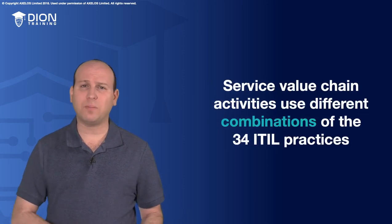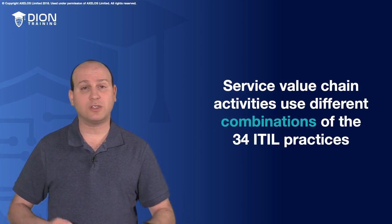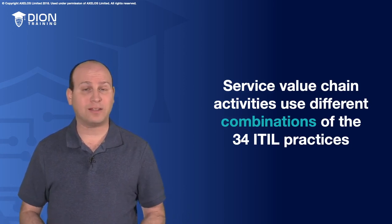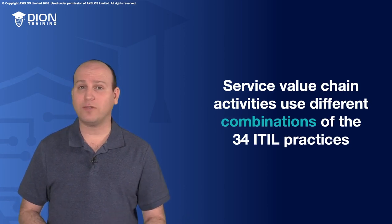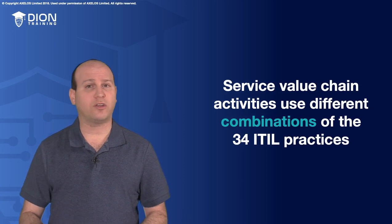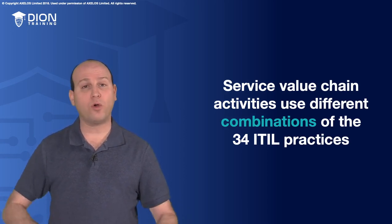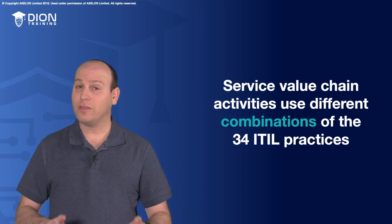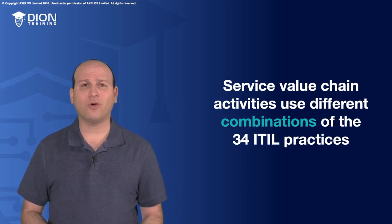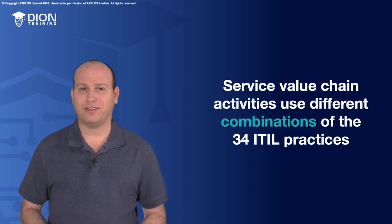To convert these inputs into outputs, value chain activities are gonna use different combinations of the 34 ITIL practices that we'll discuss throughout the remainder of this course. Each activity can draw upon internal or third party resources, and look at different processes, skills and competencies from one or more of these 34 practices. They don't have to be done individually — they can be combined together, and that's the whole idea as we get these interrelationships through the service value chain activities.